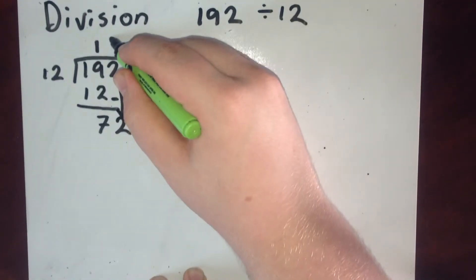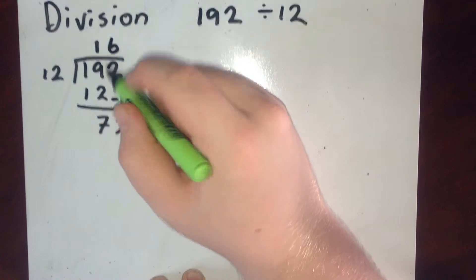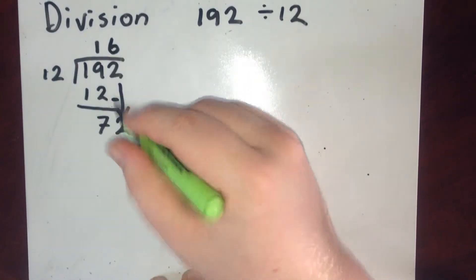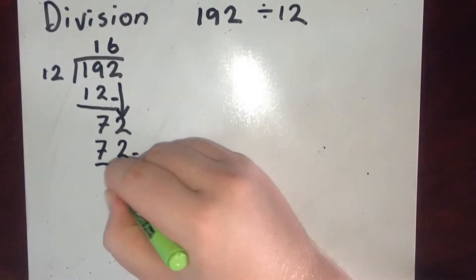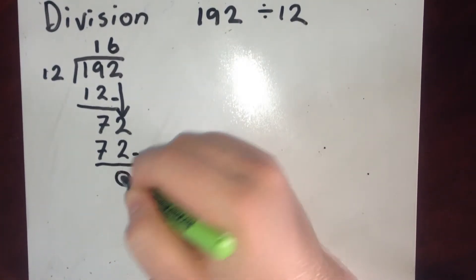There's 6 12s in 72. 6 multiplied by 12 is 72. So I take these away. I'm left with 0.